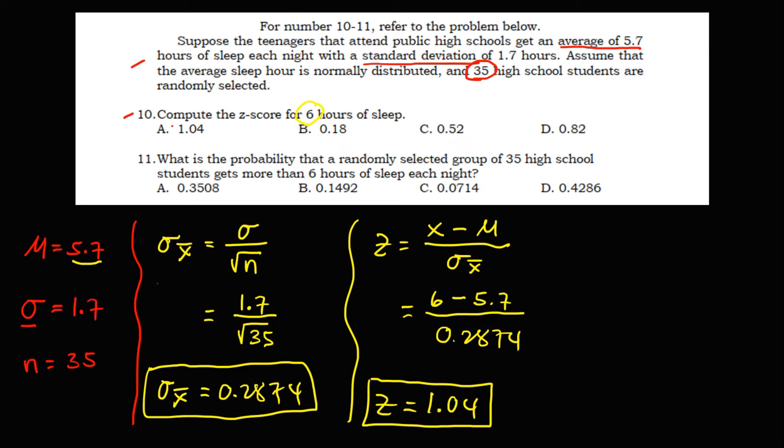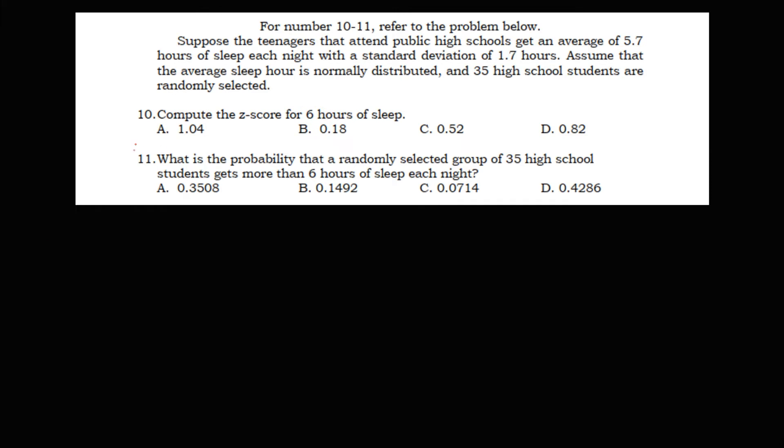Therefore, the answer is letter A. Then for this problem, what is the probability that a randomly selected group of 35 high school students gets more than 6 hours of sleep each night? So in a normal curve, so this one is the mean.